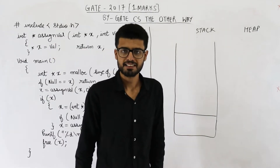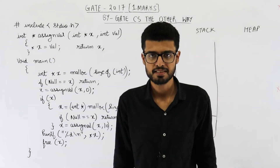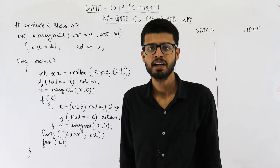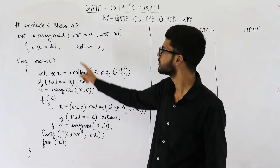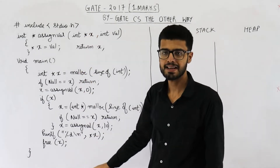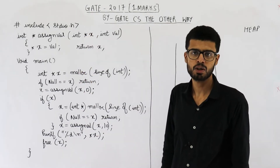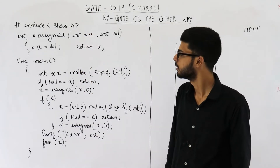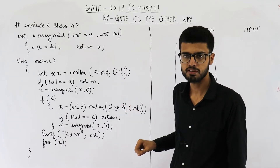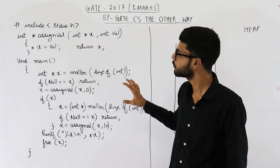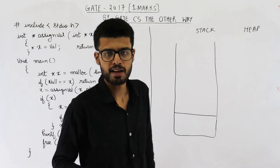Hello dear students, welcome back. This question is from the GATE 2017 exam and is for one mark. They are saying this code has some problem and you need to identify what that problem is. I'll display the options later, but first let us analyze this code.